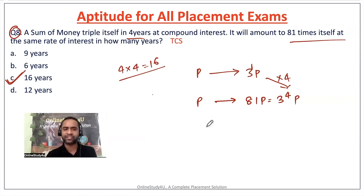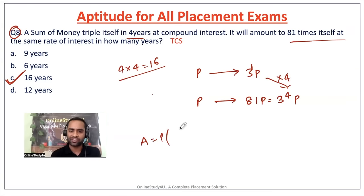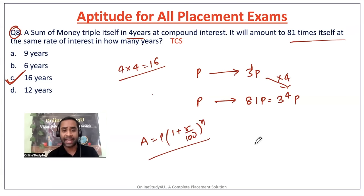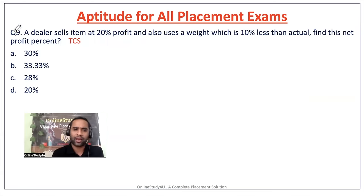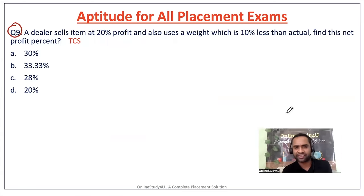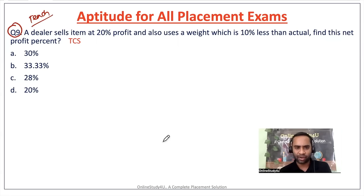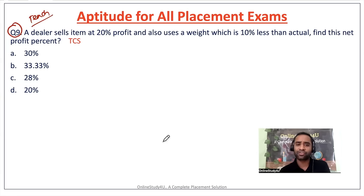If you know the tricks you will solve easily; otherwise you'll start using the formula: Amount = Principal × (1 + R/100)^N. In my classes I will not teach formulas. In many YouTube channels they teach shortcut formulas, but if you use a formula, it's not truly a shortcut — when problems vary, your approach will also vary and you may get wrong answers.